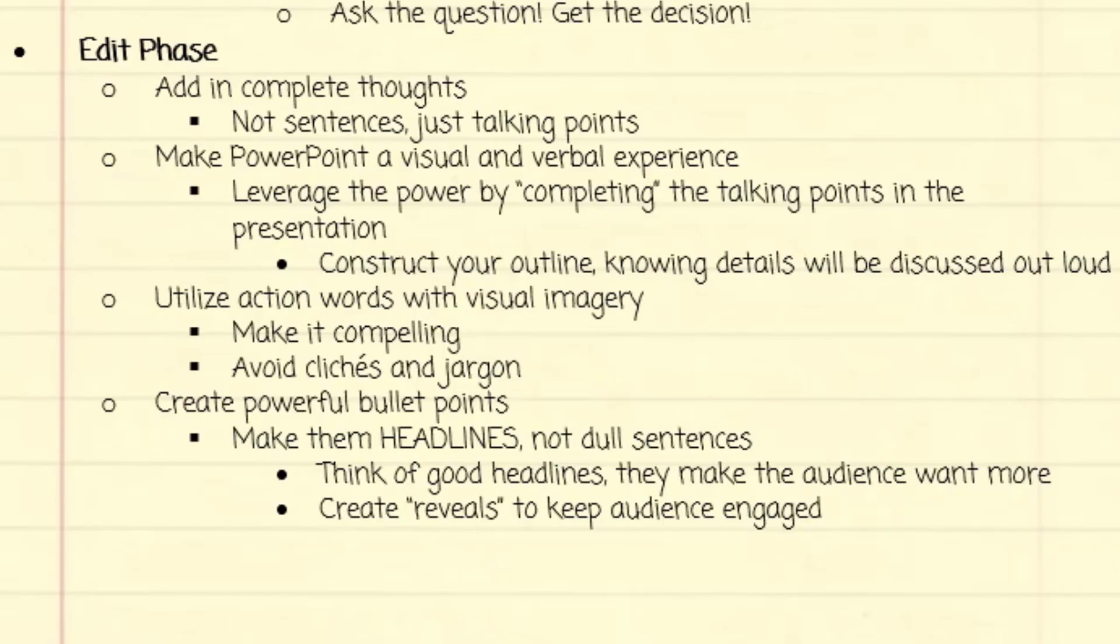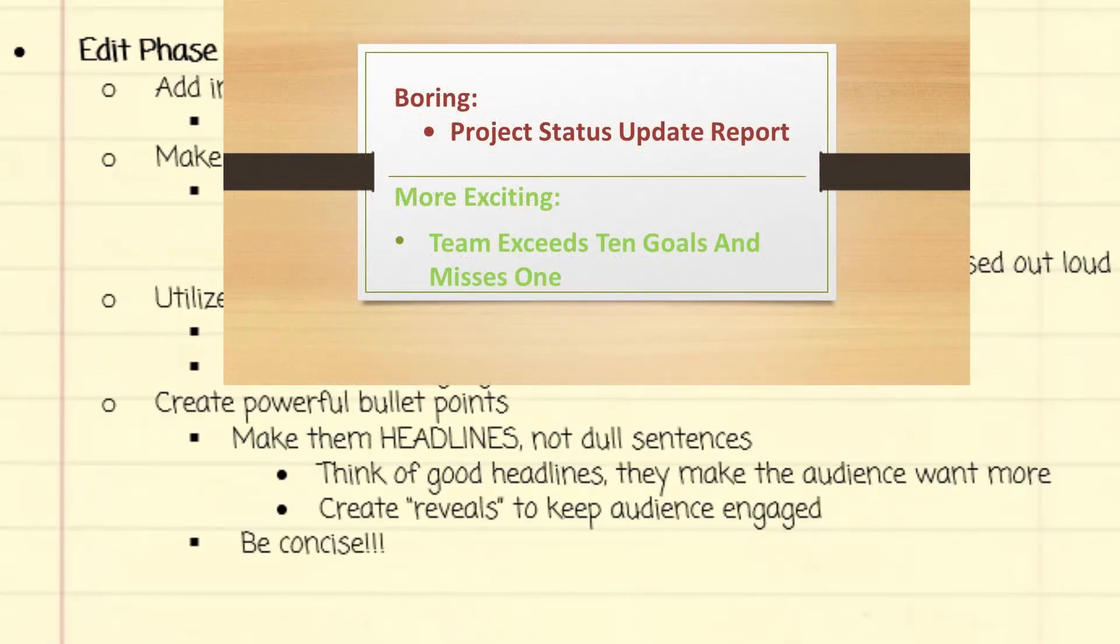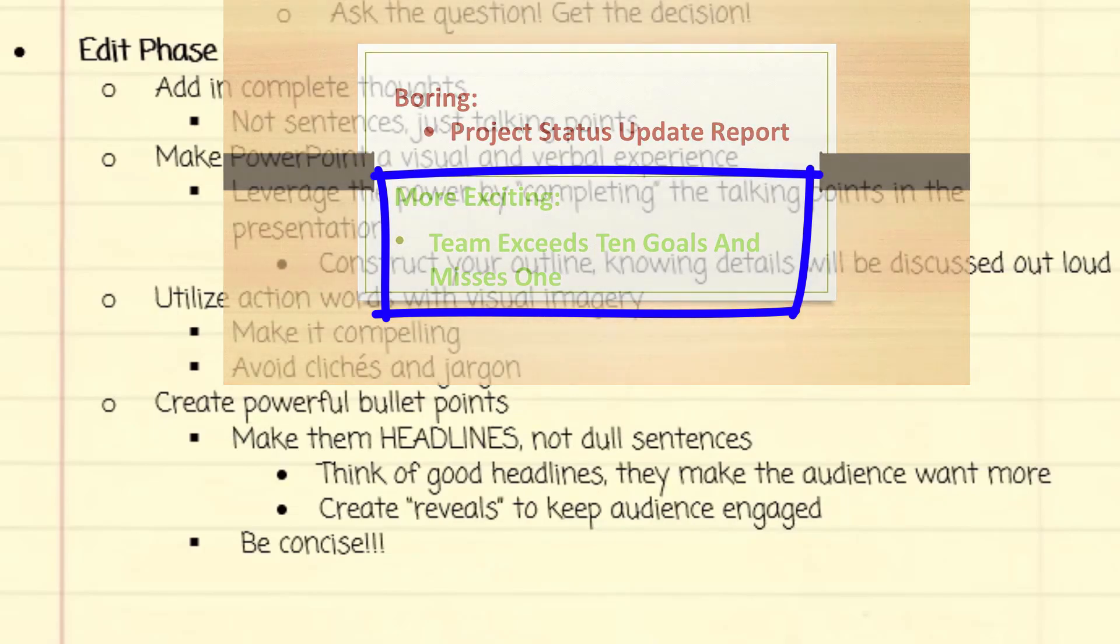If you saw the following two bullet points, which one would you want to know more about? Project status update report, or team exceeds 10 goals and misses one. And yes, that sounds like click bait, but that's the point.